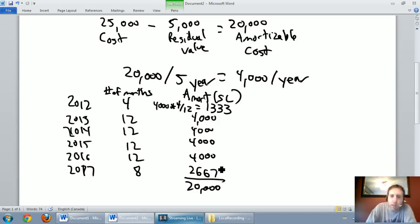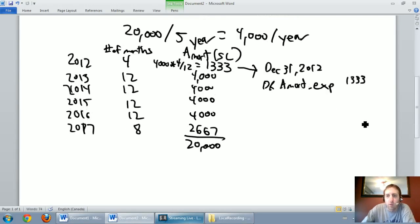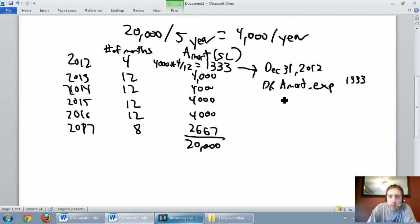Now I want you to remember as you're doing this, our journal entry for amortization - I'll just do the one for 2012 - always is going to be the same. So on December 31st, 2012, my fiscal year end, I'm going to debit Amortization Expense for $1,333 and I'm going to credit Accumulated Amortization for $1,333.